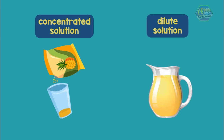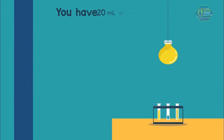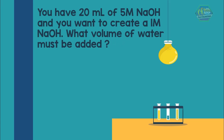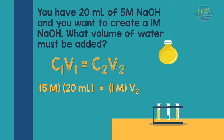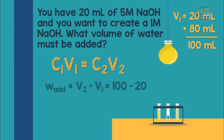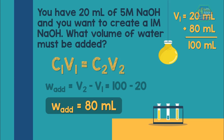Let us try a problem. You have 20 mL of 5 M sodium hydroxide and you want to create a 1 M sodium hydroxide solution. What volume of water must be added? We input the known concentration and volume into the dilution formula and solve for the final volume. Using C1V1 = C2V2 and substituting the known values, the final volume should be 100 mL. Since we have an initial volume of 20 mL, we just need to add 80 mL of water to make a total of 100 mL. Hence the volume that must be added is 80 mL of water.